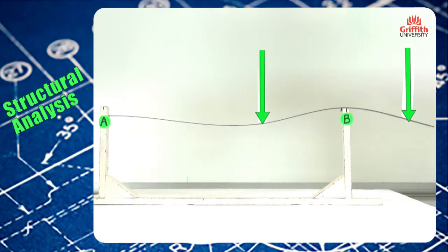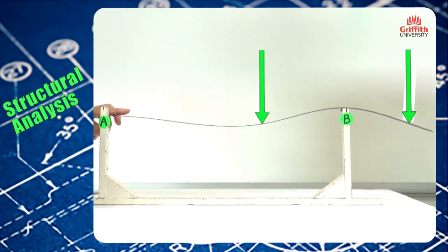Now the beam deflects and we can see that because support A is a fully fixed support, there is no rotation, so the beam starts flat and comes down from a convex curvature into a concave curvature.